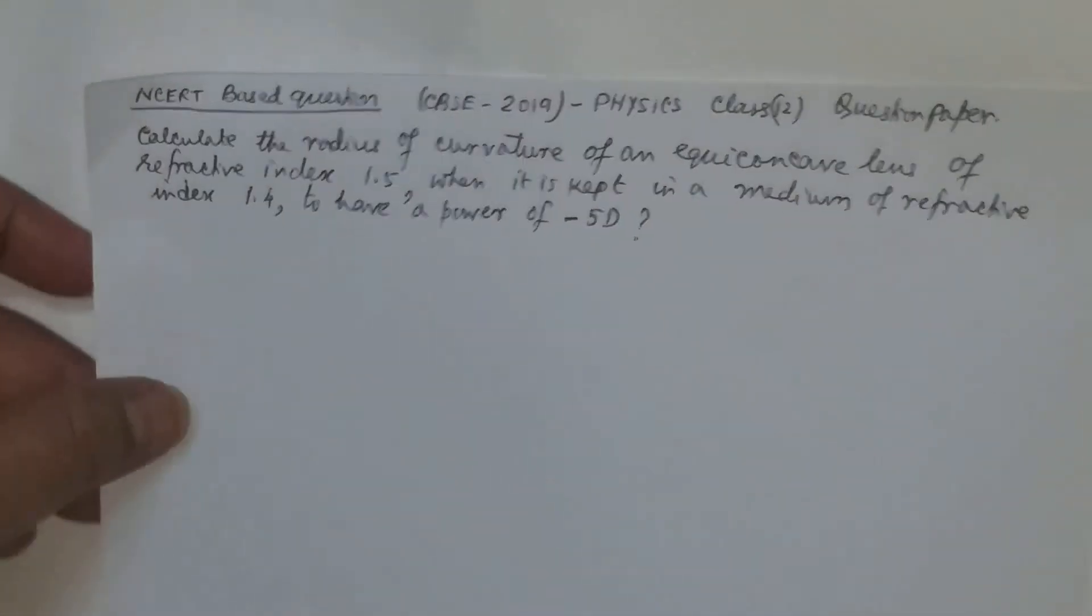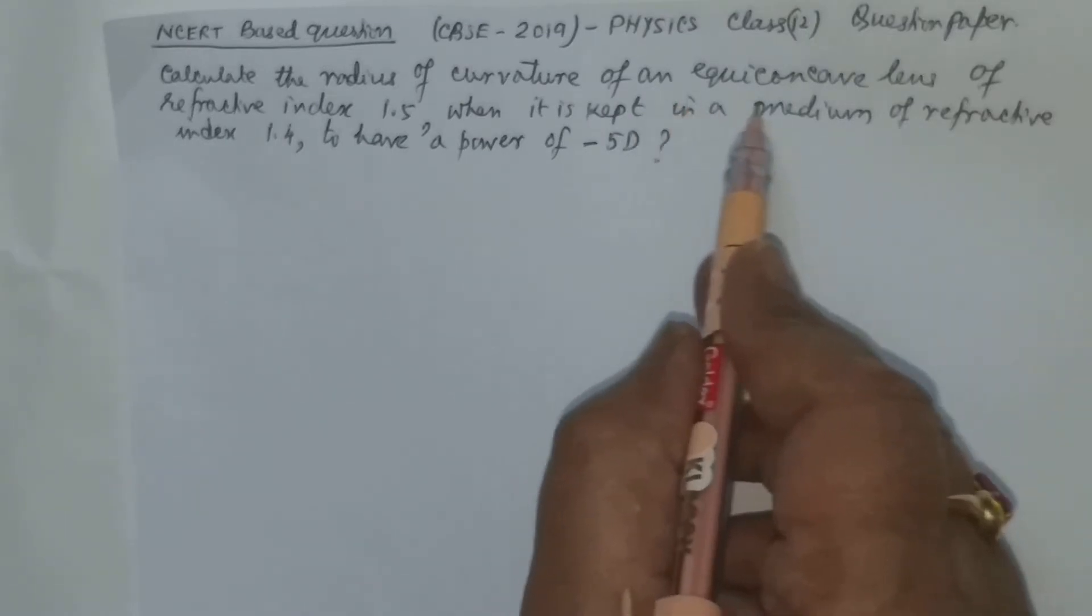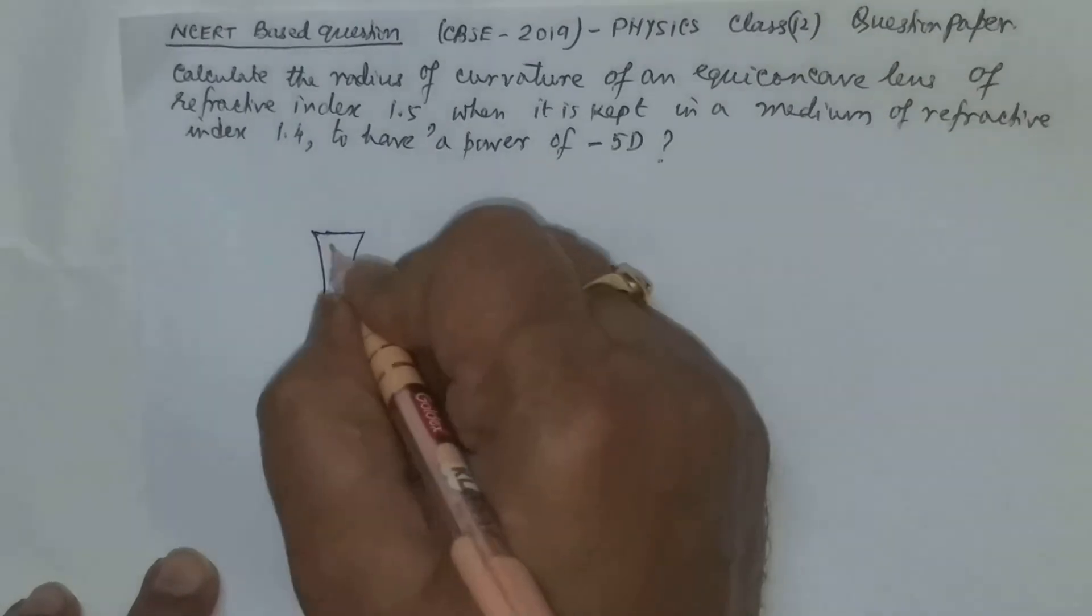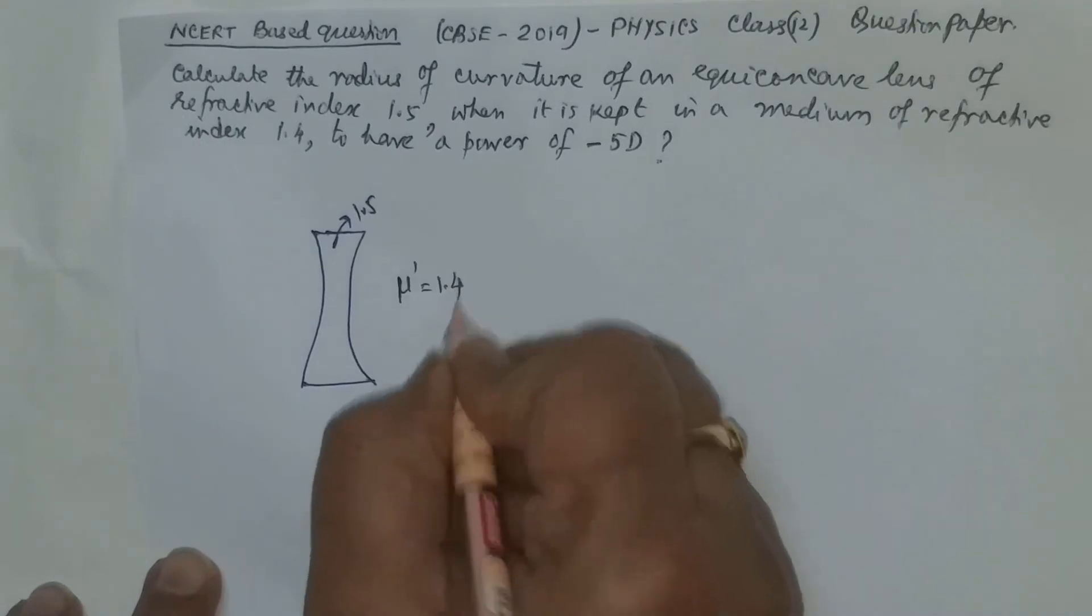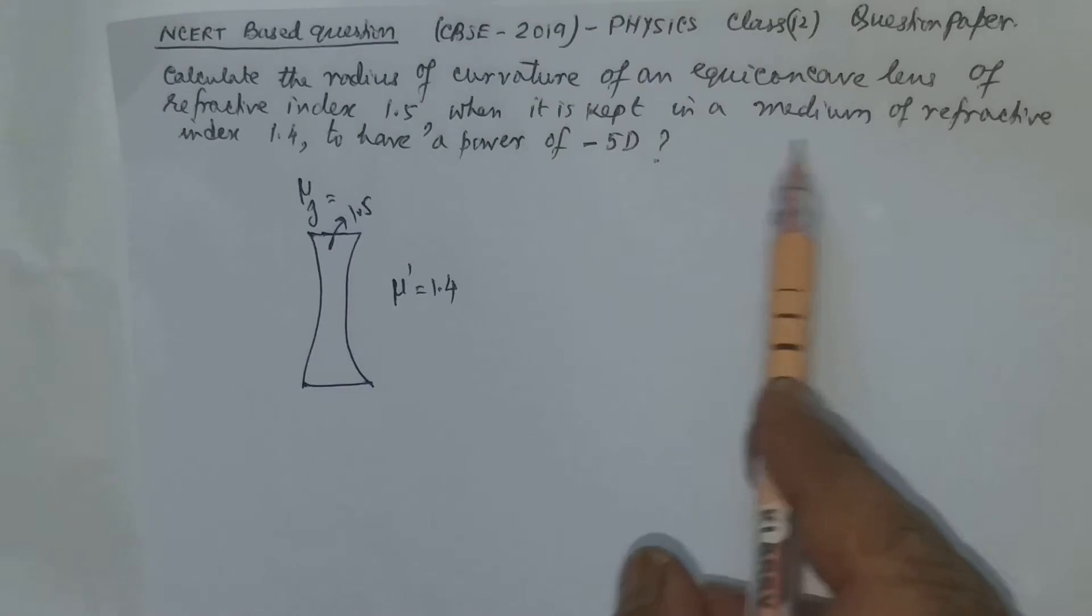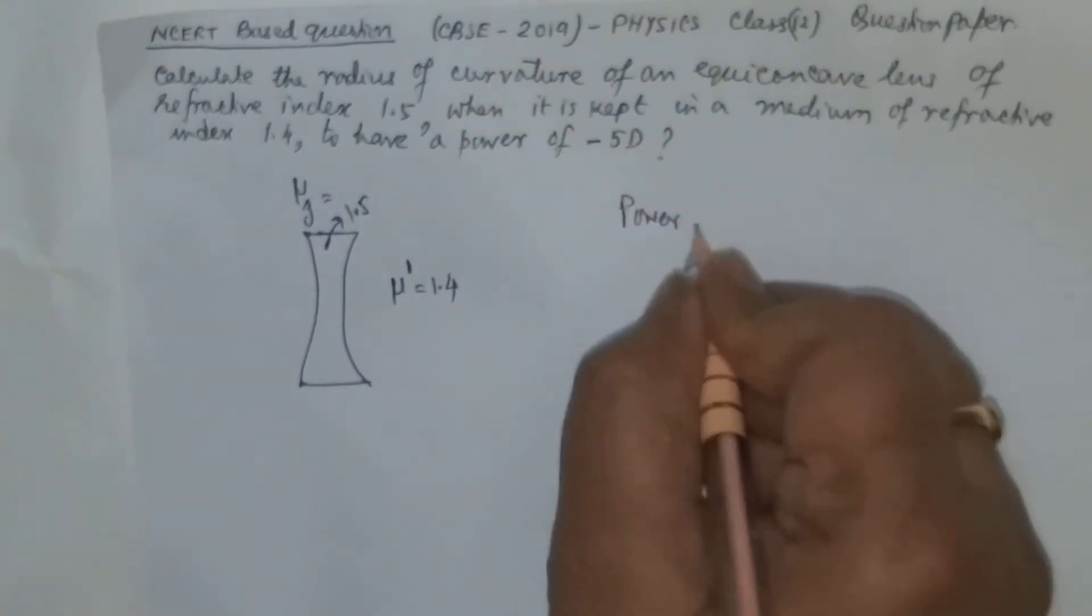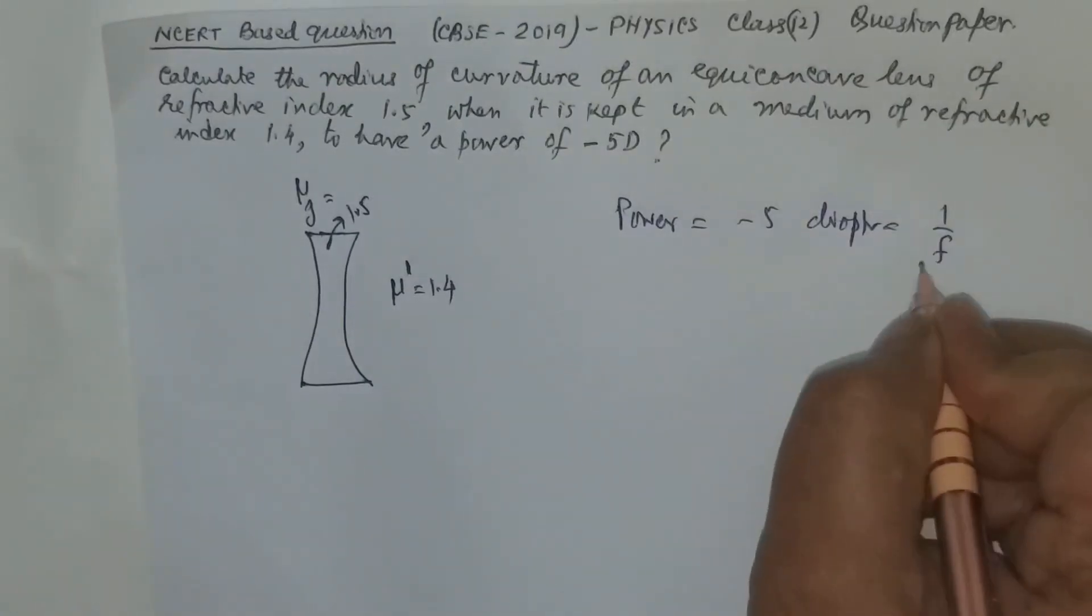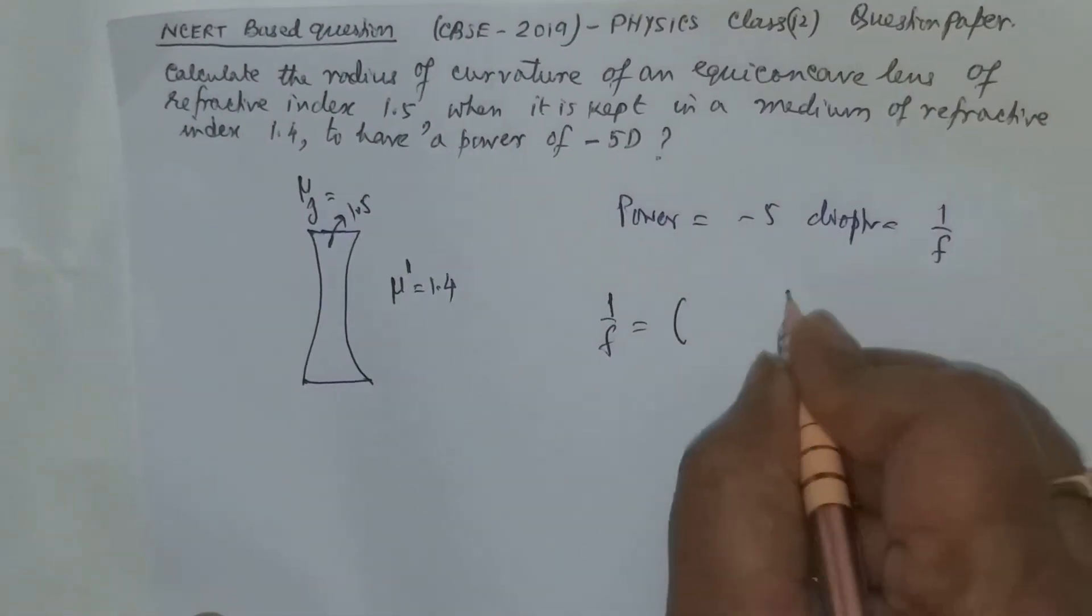The other question follows. Calculate the radius of curvature of an equiconcave lens of refractive index 1.5. This refractive index 1.5, while the surrounding refractive index is 1.4. So this is μ for the glass, and it is kept in a medium of refractive index 1.4, and it is having a power of minus 5 diopter. What is power? It is 1 by focal length.